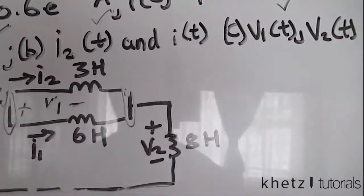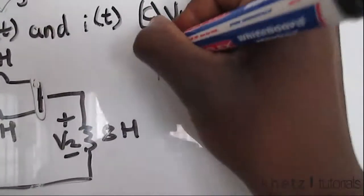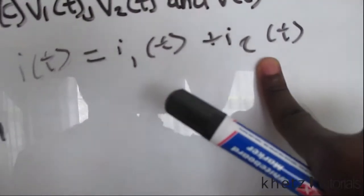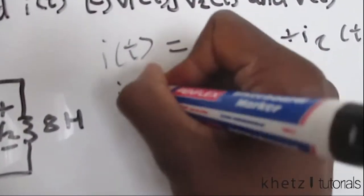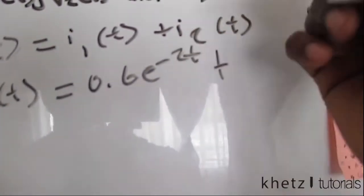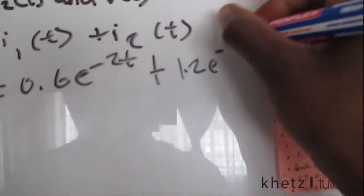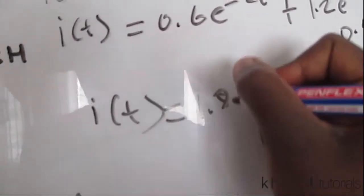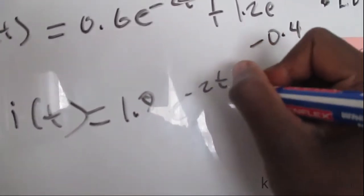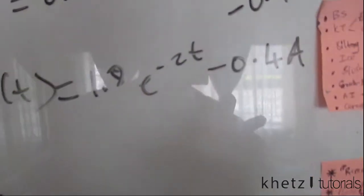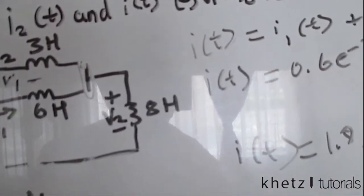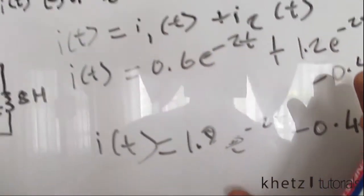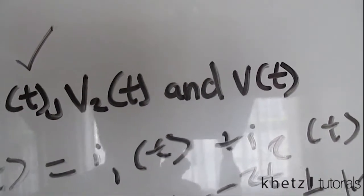After finding i2(t), we recall that i splits into i1 and i2, so i(t) = i1(t) + i2(t). We're given i1(t) = 0.6e^(-2t) and just found i2(t) = 1.2e^(-2t) - 0.4. Therefore i(t) = 0.6e^(-2t) + 1.2e^(-2t) - 0.4 = 1.8e^(-2t) - 0.4 amperes.